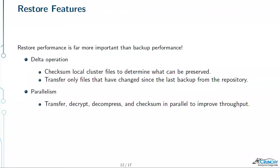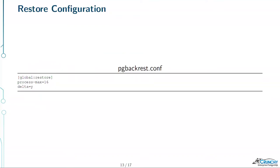Delta is not the default mode. The default expects an empty directory — if the directory is not empty, you'll get an error, but it will suggest you could run --delta. You definitely want to turn on delta. All of this is running in parallel to the degree you specify. Restore process-max equals 16 in our example. So we had archive-push at four, archive-get at two, backup at eight, and restore at 16. Restore should generally be about twice or even three times backup. Archive-get should be about half of archive-push.